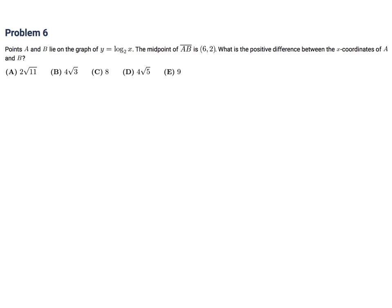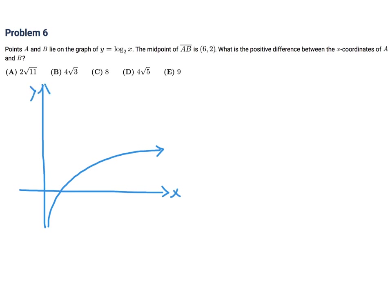Points A and B lie on the graph y equals log base 2 of x. The midpoint of AB is (6, 2). What is the positive difference between the x-coordinates of A and B? Let's see if I even remember how to draw the log graph — I think it's something like this. It's been a long time since I've manually drawn log graphs. We have no idea where A and B are, but I can approximate — the midpoint 6, 2, let's just put it here.